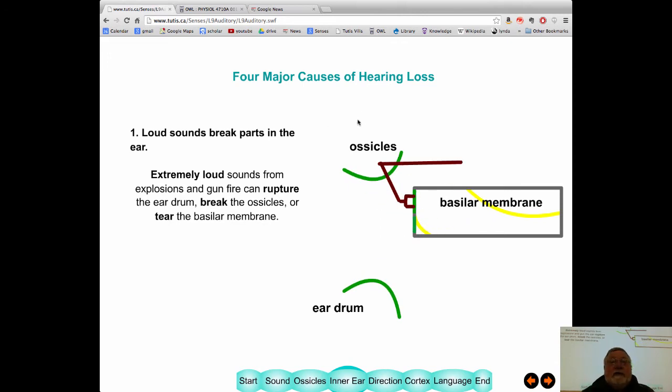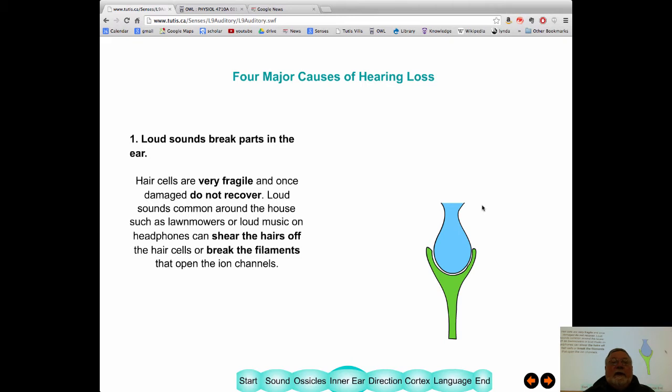Now, you could get a hearing loss that's not infrequent. And an extremely loud sound, like an explosion or somebody shooting a gun off beside your ear, can do a number of things. It can break the eardrum. It can break the basilar membrane. And, of course, it can break the ossicles, these bones that connect to it. A little less of a loud sound can damage the hair cells. It can wipe the hairs off the hair cells. Or, at the very least, break some of those filaments that connect those flaps that allow potassium to flow in and out.